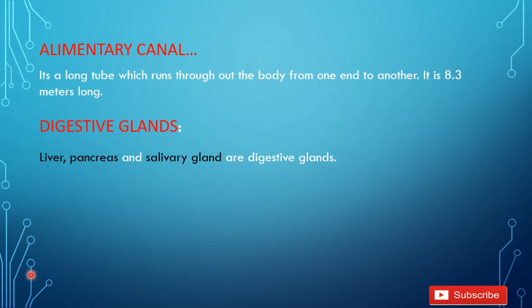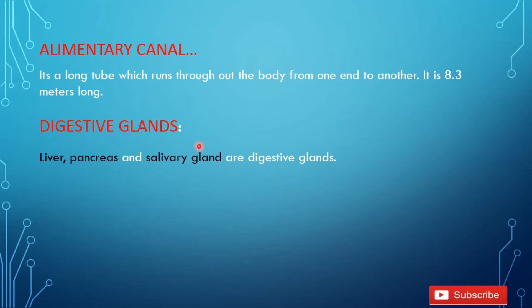How can you define the alimentary canal? It is a long tube which runs throughout the body from one end to another. It is 8.3 meters long. It is a long tube which runs throughout the body with different diameters. It starts from the mouth and ends at the posterior end — the anus. It has different parts according to its different diameters.